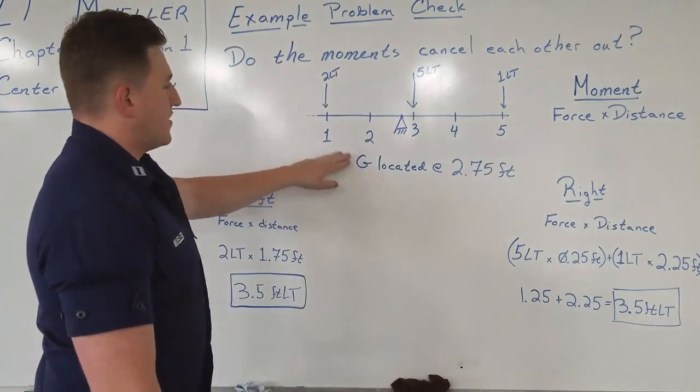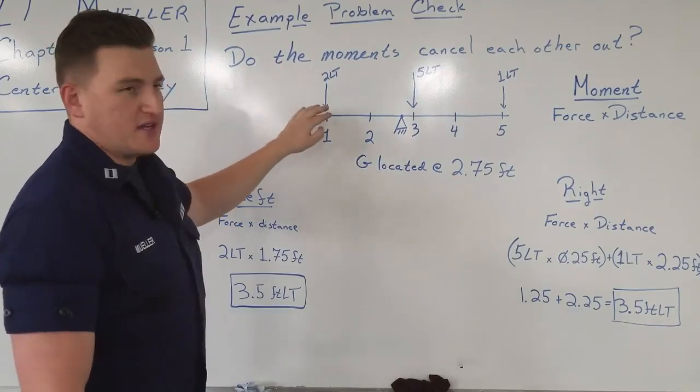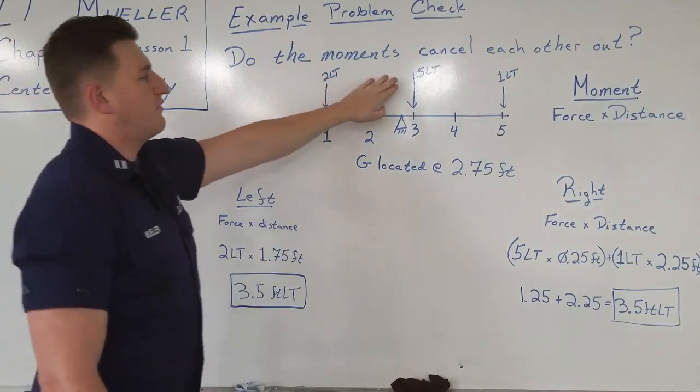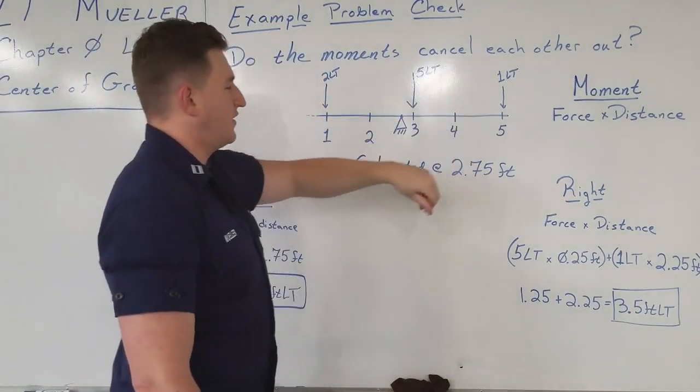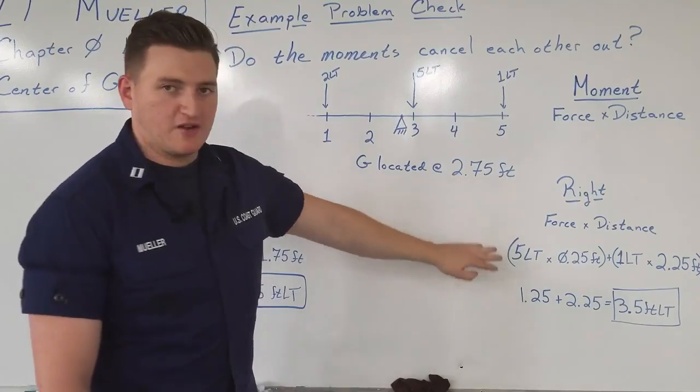Now the question that we ask ourselves is, do the moments cancel each other out? We're going to have moments on one side trying to make the system spin counterclockwise, and the other side is going to try and make it spin clockwise. Like I said, a moment is just a force times a distance. And I've redrawn our system, but instead of boxes, I just have arrows that represent the force that each mass is imparting on the system. So we have a force of two long tons here, we have five long tons here, and one long ton here, with a pivot point drawn at 2.75, which is what we calculated as our G.